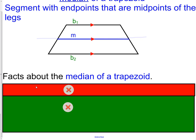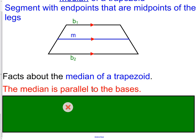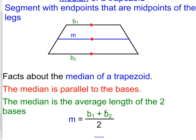Facts about the median of a trapezoid: First, the median is parallel to the bases. If we have base one and base two that are parallel to each other — noted by the red arrows — the median through the middle of the trapezoid is also parallel, noted by the red arrow. Also, the median is the average length of the two bases. If I take the length of base one plus the length of base two divided by two, I'll find the length of the median: (base one + base two) ÷ 2 = length of the median.